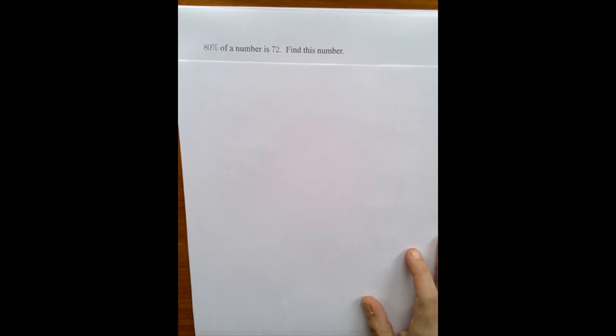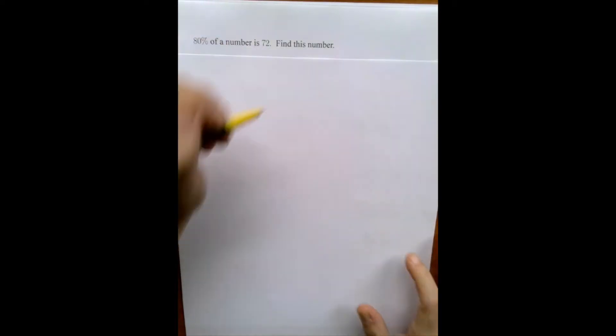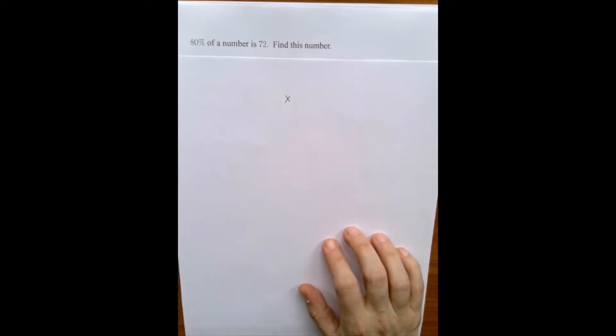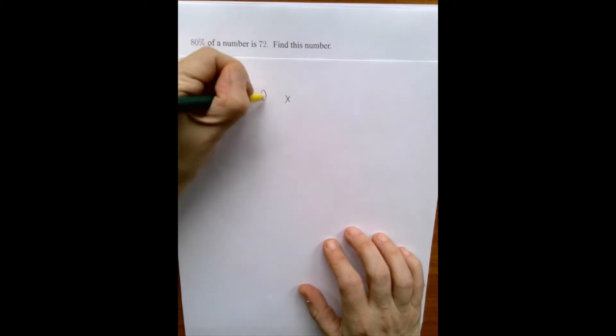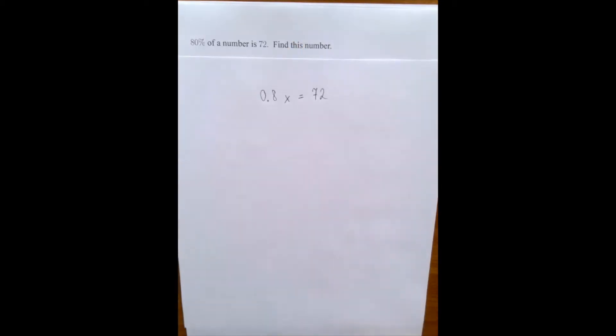So 80% of a number is 72. Find this number. Well, once upon a time, there was a number x. And when we took its 80%, we got 72. What is that number?